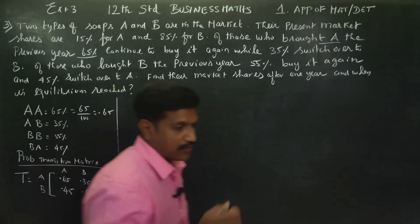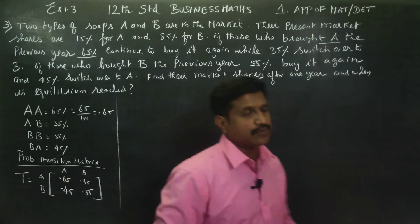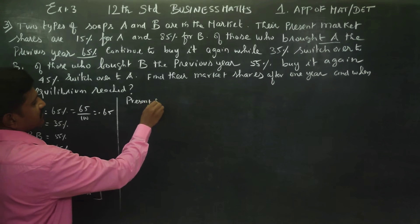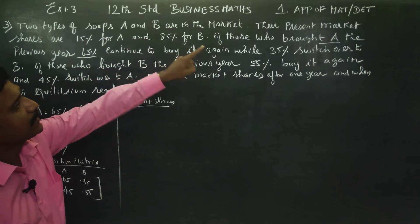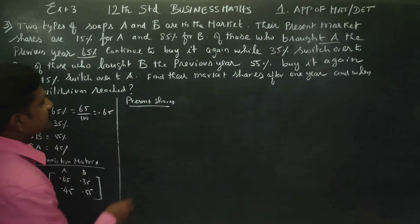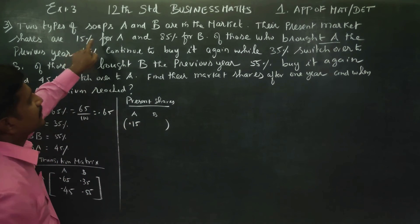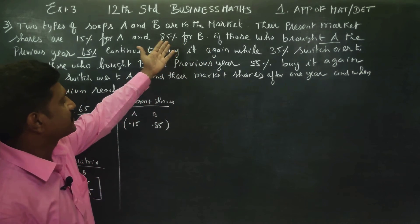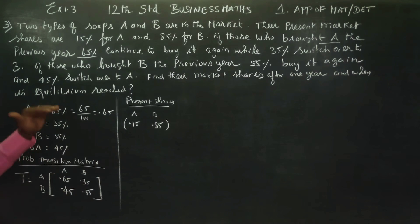This is the first stage. You have to make ready the probability transition matrix. 50% of the sum is over. This is the present market situation, present shares.